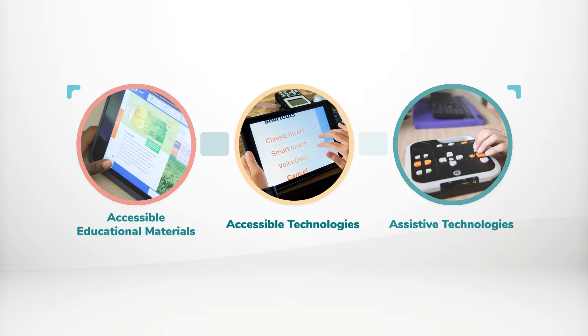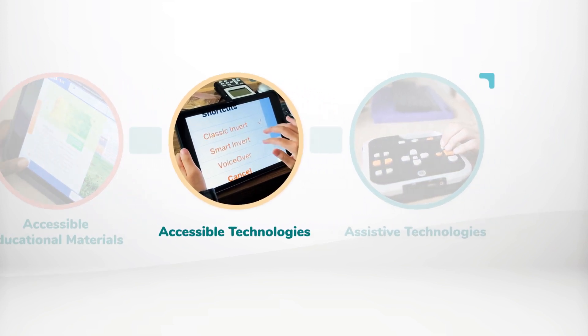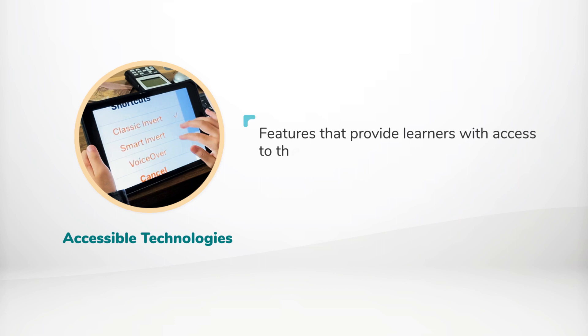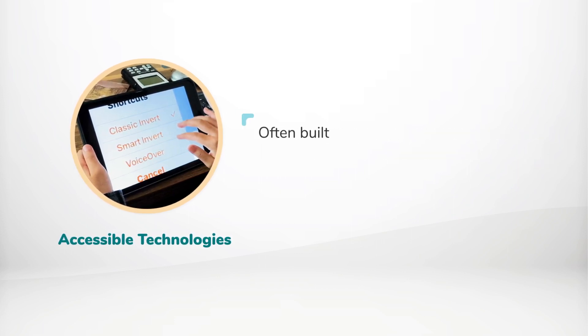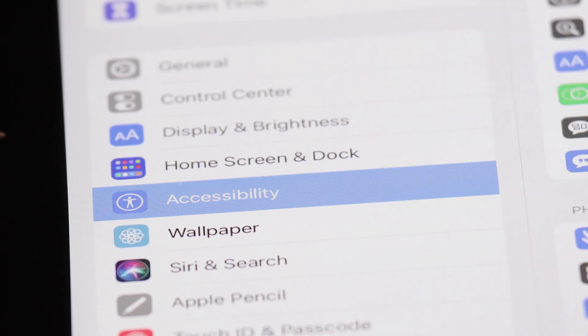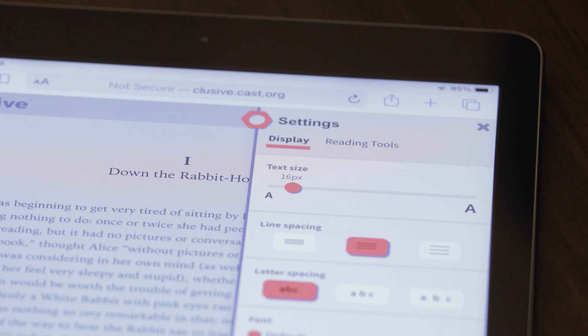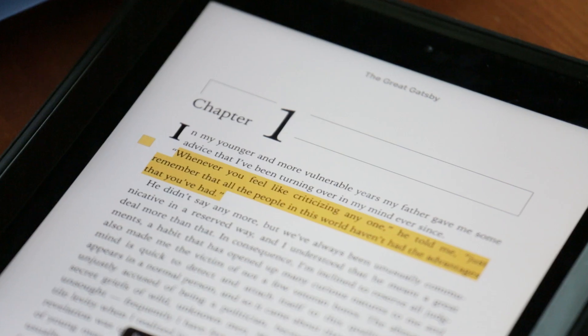The next category of inclusive technology is called accessible technologies. Accessible technologies are features that provide learners with access to the content and digital materials. They are often built-in features that can be enabled. Some examples of accessible technologies include built-in text-to-speech features in digital textbooks, options within software or mobile devices to adjust fonts or color contrast, and text highlighting tools.